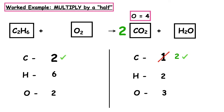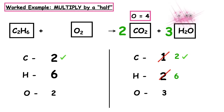Carbons balance — tick them off. How many hydrogens on the left? Six. On the right? Two. What do we do to two to get to six? We multiply by three, so we put a big 3 in front of the H₂O. Two hydrogens inside the box times three gives six. One oxygen inside the box times three gives three, so I put a 3 in a box above the H₂O. Hydrogens balance — tick them off.